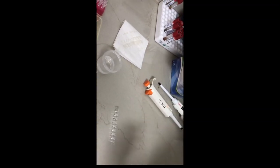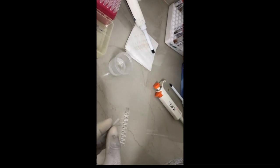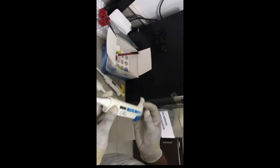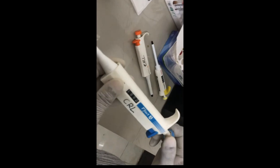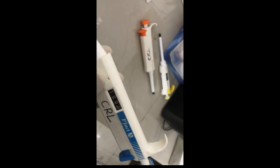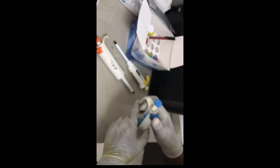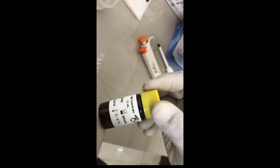We will do the next step by adding 100 microliters of TMB substrate to it. 100 microliters of TMB substrate will be added to each of these wells. Now again we have set our pipette to 100 microliters. This is the TMB substrate which we will add to all the wells.